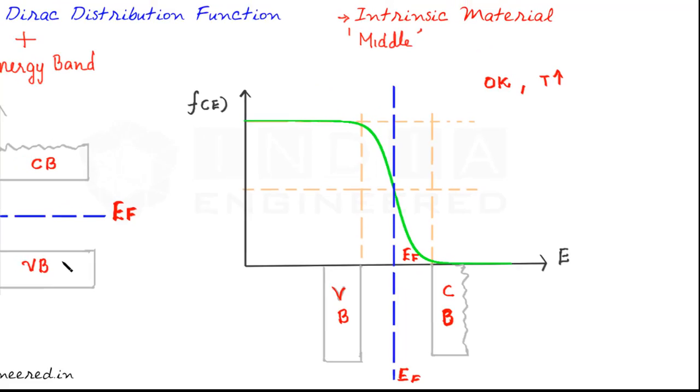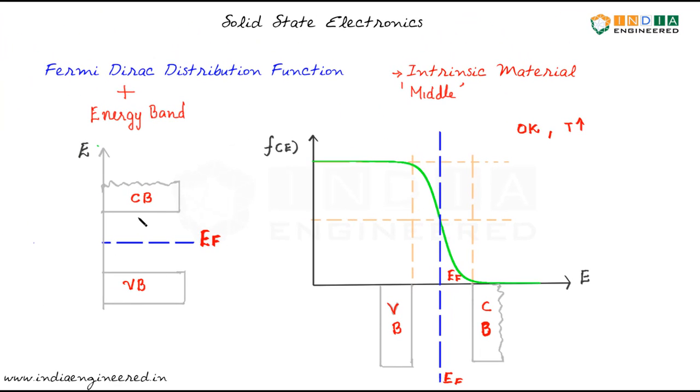We know that as temperature increases, the valence band electrons gain sufficient energy, cross the barrier and move to conduction band.